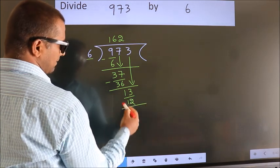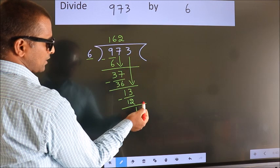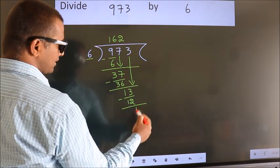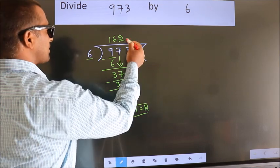Now we subtract and get 1. No more numbers to bring down, so we stop here. This is our remainder, and this is our quotient.